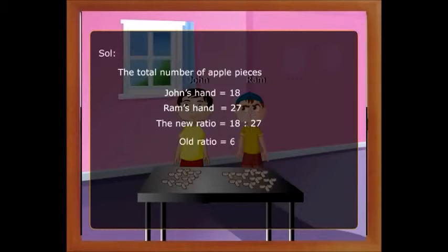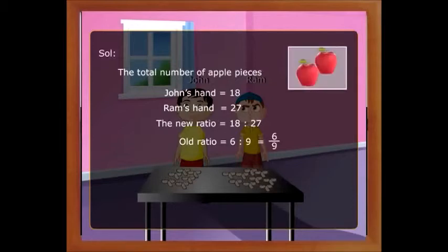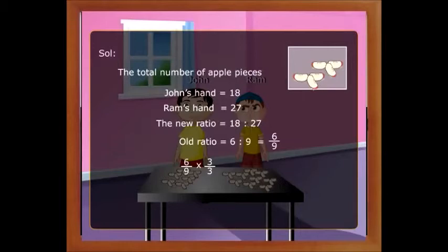How did we get this new ratio? The old ratio is 6 is to 9, which can also be written as 6 by 9. Since each apple is cut into 3 equal parts, the new ratio is obtained by multiplying the numerator and denominator by 3 — that is, 6 into 3 by 9 into 3, which equals 18 by 27. The quantities of the apples remain the same, meaning the ratio is not affected by multiplying the numerator and denominator by the same number.